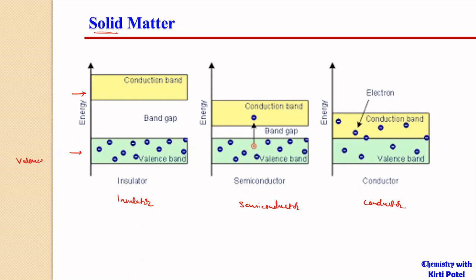There are two bands present in every solid: one is the valency band and another is the conduction band. Metals are very good conductors of electricity because their conduction band contains many free-flowing electrons that are not associated with any particular atom but belong to the complete sheet of metal. These electrons can be utilized for conduction of electricity because the gap between the conduction band and valency band is very small.